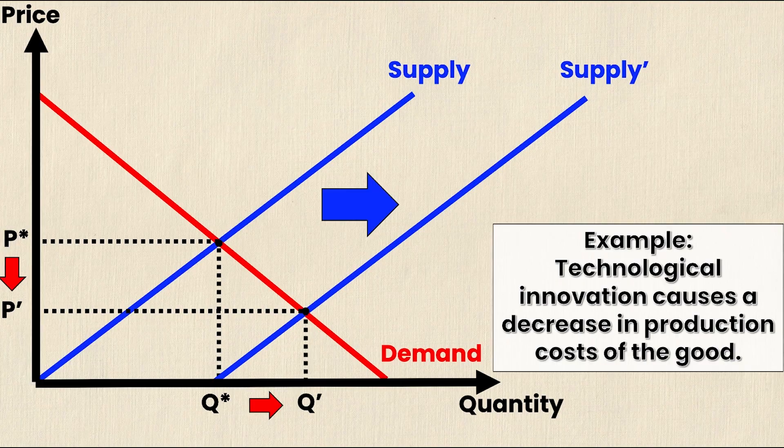This will always be the case when there's a rightward shift in supply with no change in demand. It does not matter if there's a small shift or a large shift. If demand does not move and supply shifts to the right there will always be a fall in price and an increase in quantity.